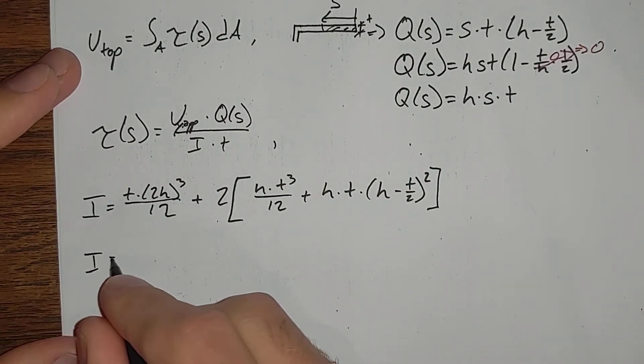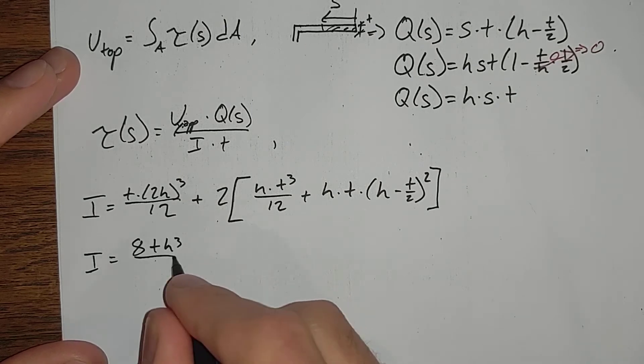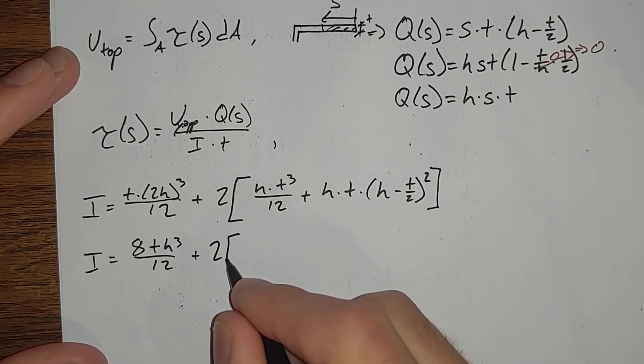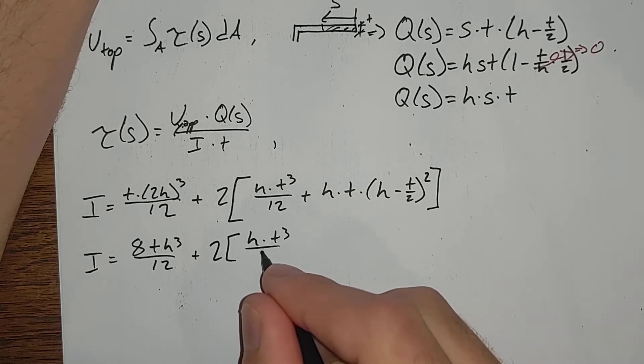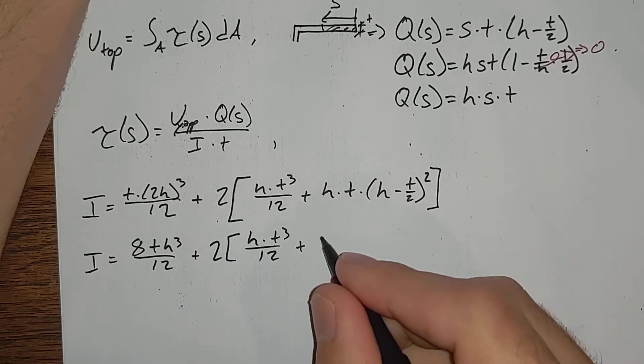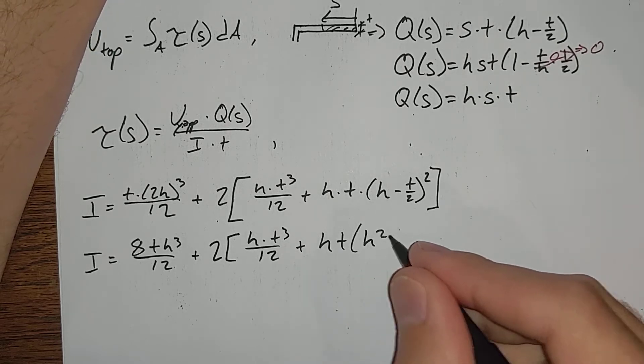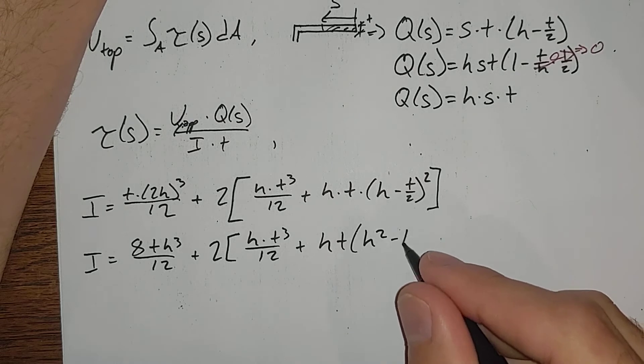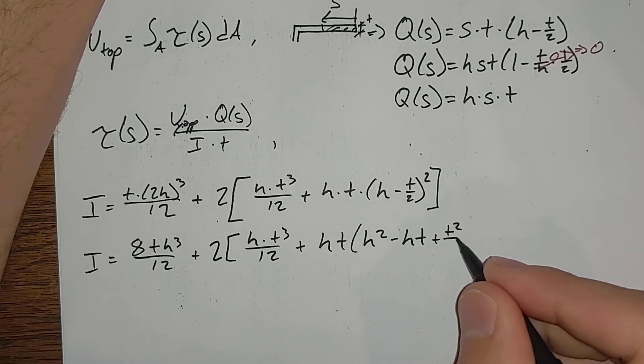Simplifying, I equals 8th cubed over 12, plus 2 times ht cubed over 12, plus ht, we've got ourselves h squared minus 2 of that, so ht plus t squared over 4.